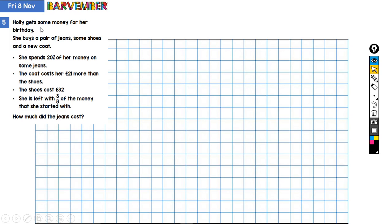Holly gets some money for her birthday. She buys a pair of jeans, some shoes and a new coat. She spends 20% of her money on jeans. The coat costs her £21 more than the shoes. The shoes cost £32. She's left with three-eighths of the money that she started with. We are asked how much did the jeans cost.